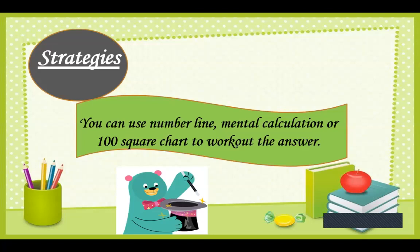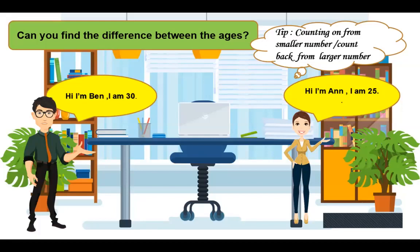Strategies: You can use number line, mental calculation, or 100 square chart to work out the answer. Now children, look at the screen. Can you find the difference between the ages? I'll repeat, difference means subtraction. You can use counting on from smaller number or count back from larger number.